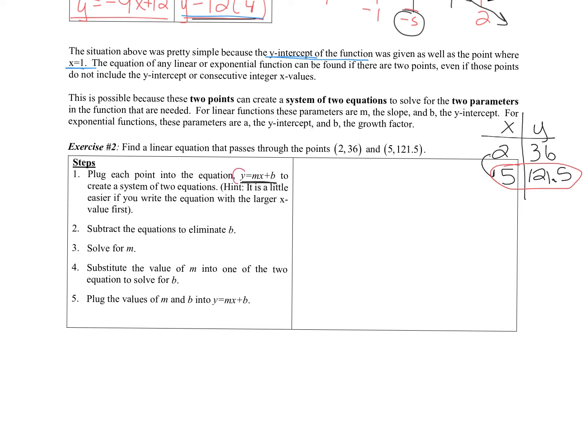So I am going to plug in this point first to follow that advice. With y equals mx plus b, the y in this first point is 121.5, we don't know the slope, the x value is 5 and we don't know the b. With my other equation now we're going to plug in this one: the y is 36 equals m times 2 plus b. From now on instead of writing m5 and m2 I'm going to write 5m and 2m just because that's going to make it a little easier for me to go through this process.